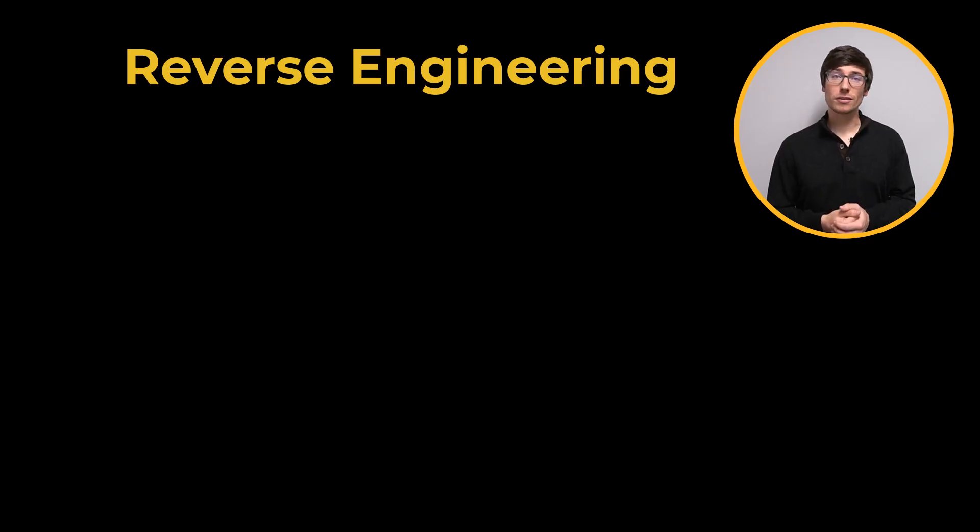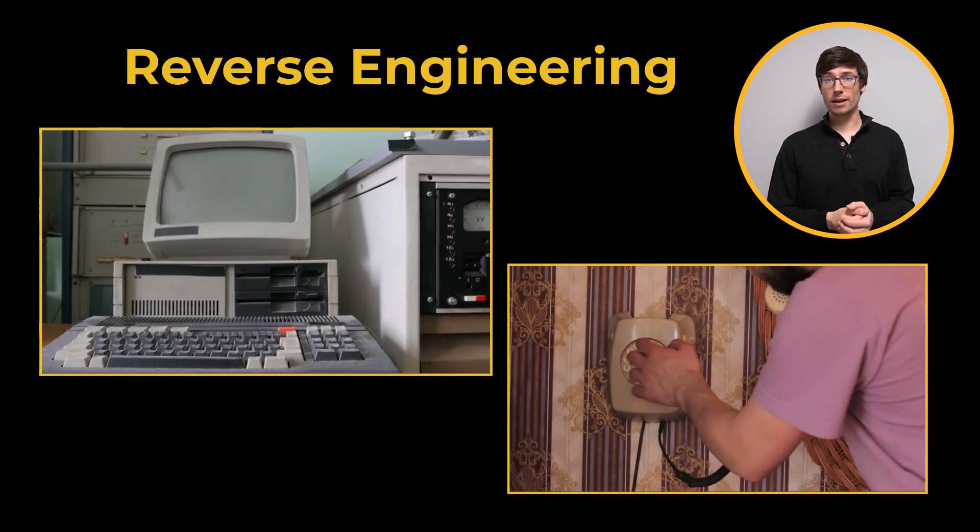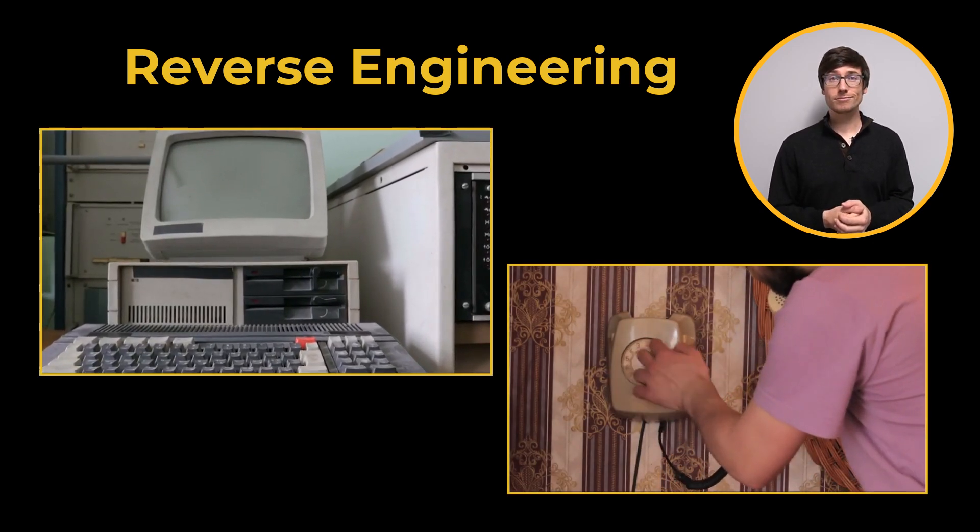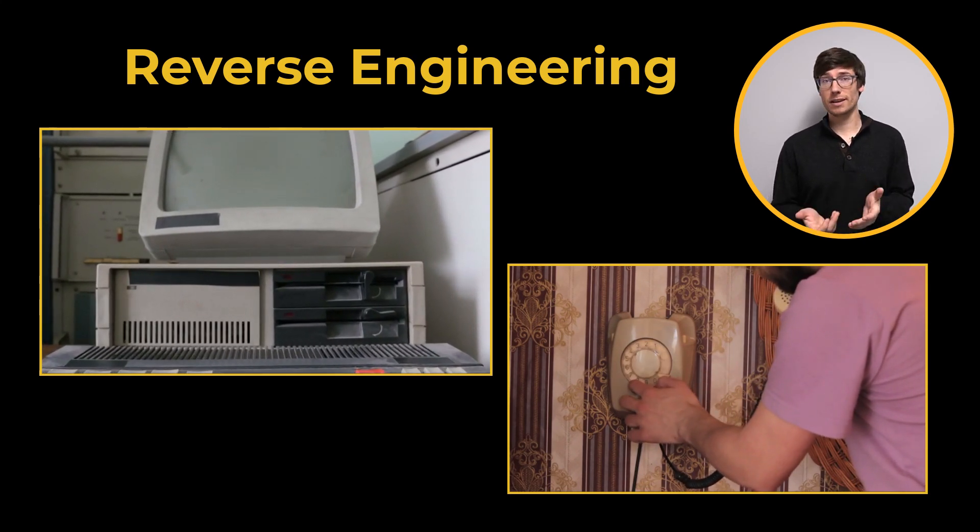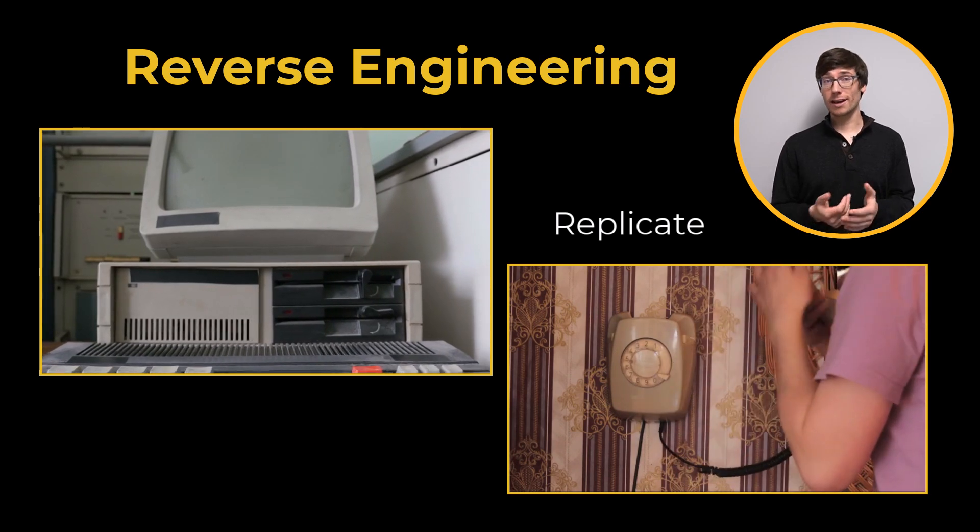In the engineering world, it works in a similar way. You may find a machine that is currently on the market or decades old. If the machine is broken and the original manufacturer is out of business, you may need to replicate a part to get it running again.